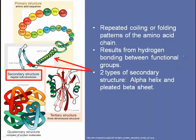Secondary structure of proteins results from the repeated coiling or folding patterns of the amino acid chain. This is because the functional groups actually interact with each other through hydrogen bonding. Since this involves hydrogen bonding, secondary structure is actually pretty easy to change. There are two types of secondary structure: the alpha helix and the pleated beta sheet.